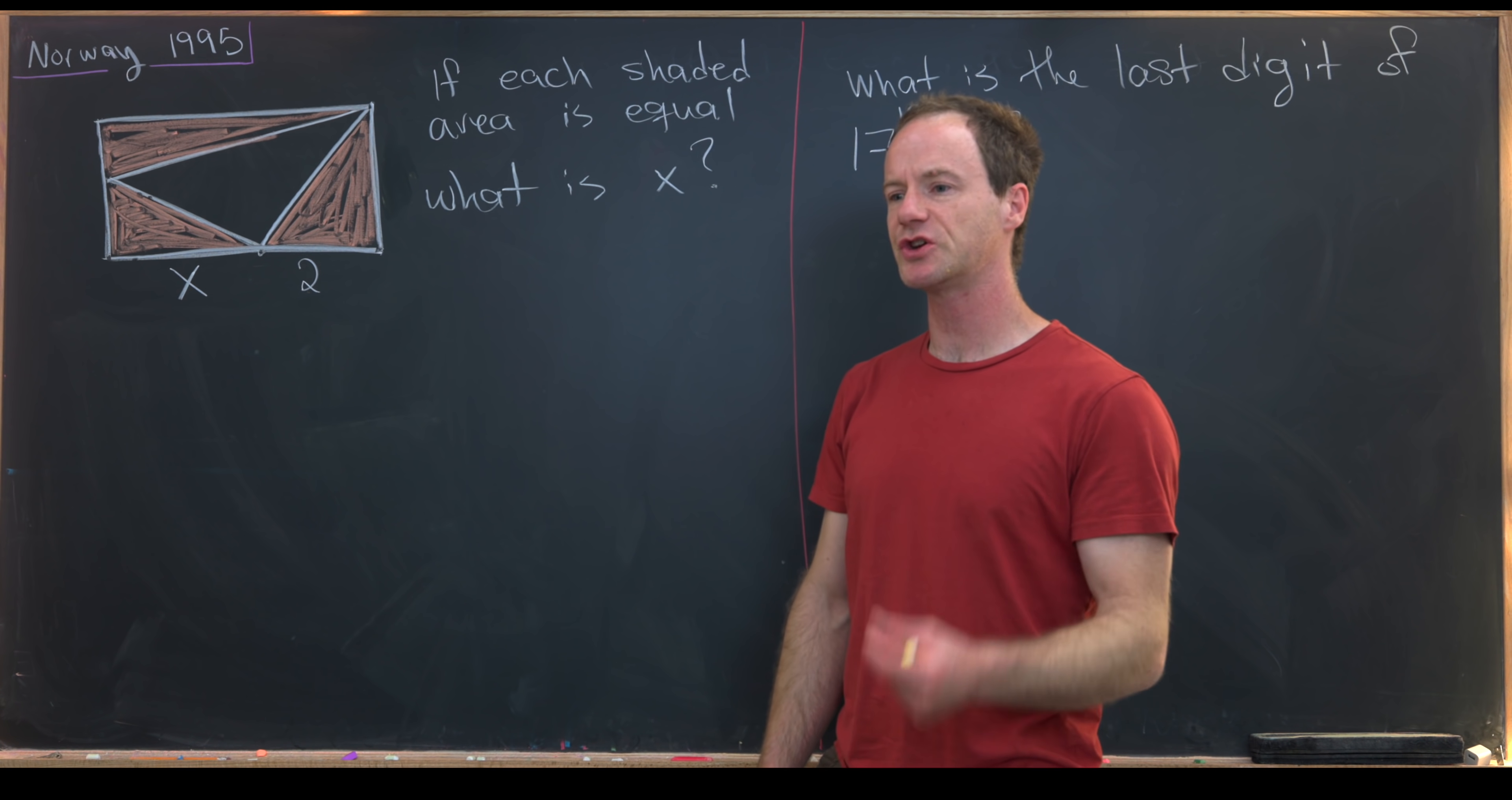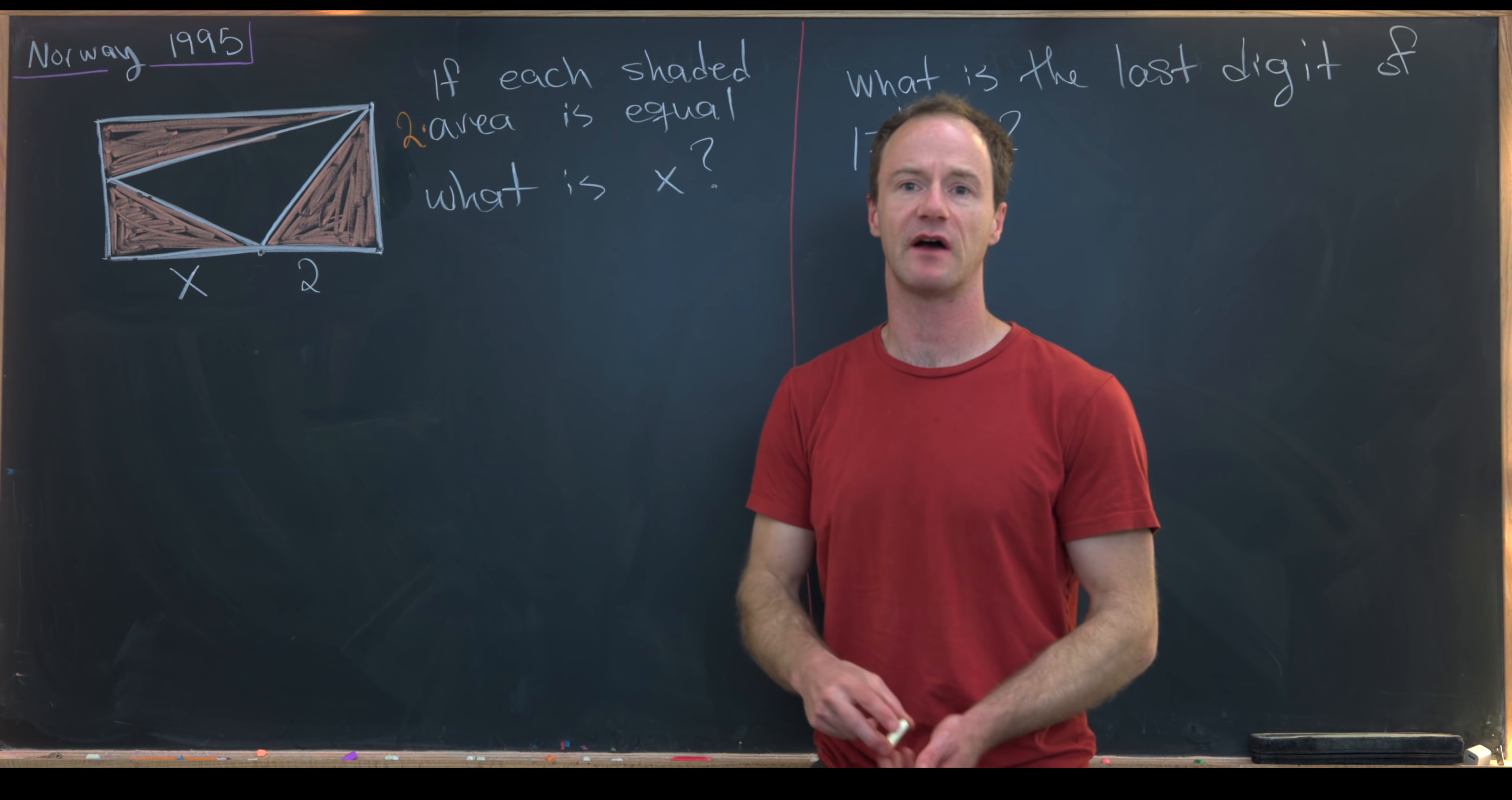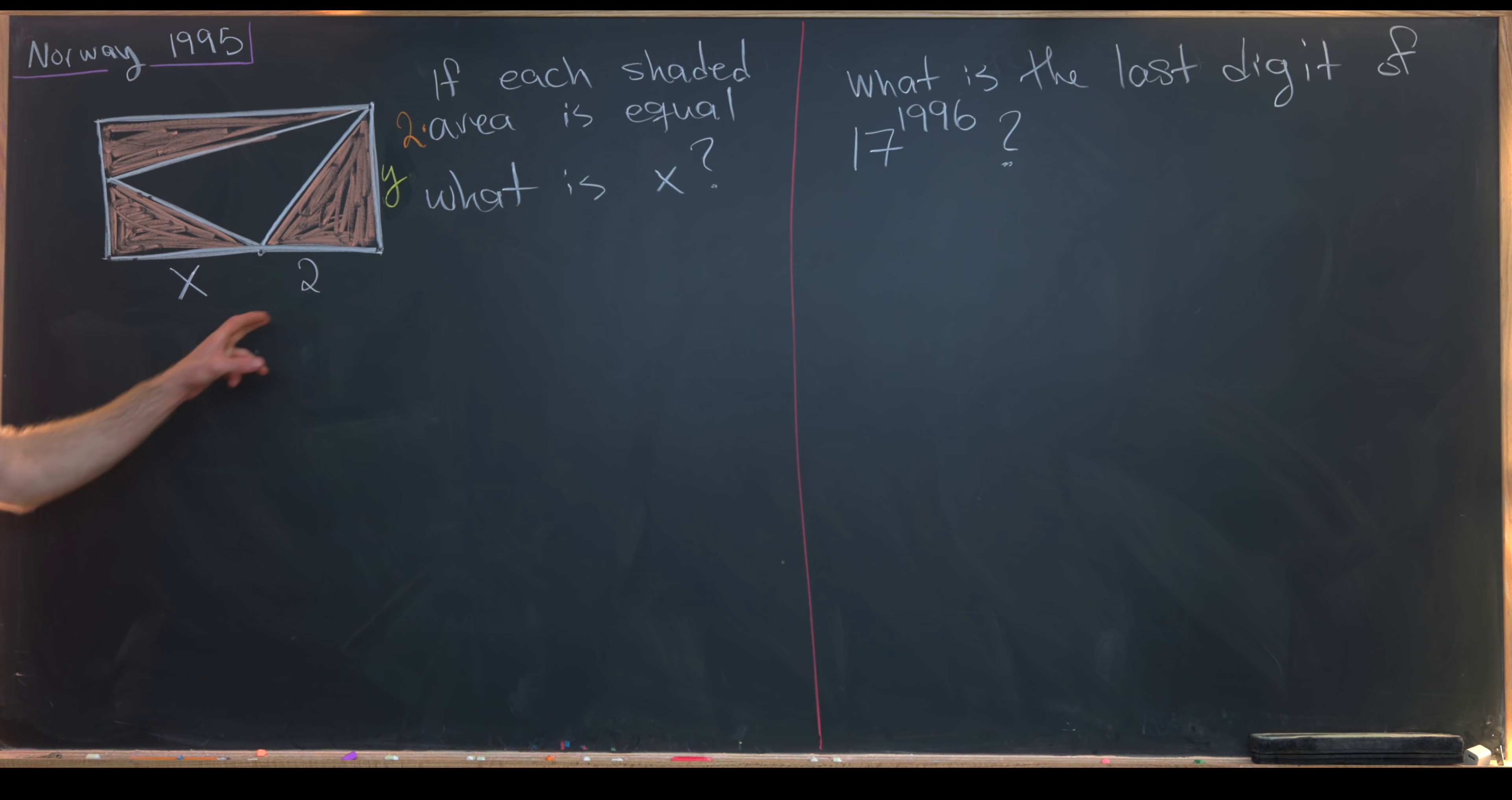So let's get to it. When we're talking about the areas of these triangles, we're in fact going to talk about twice the areas of these triangles, just so that we don't have to divide by 2. We'll start by saying that the height of this rectangle is y, which means that twice the area of all of these triangles is 2y.